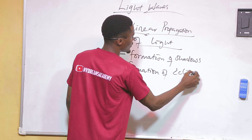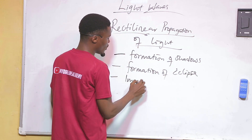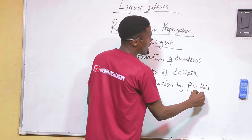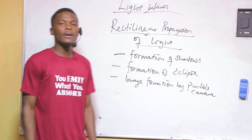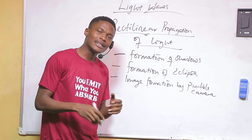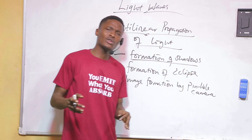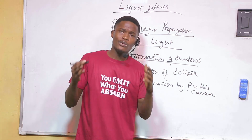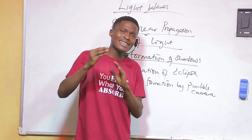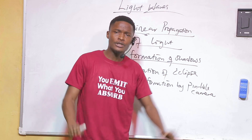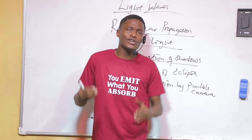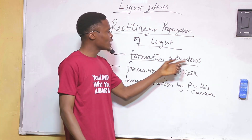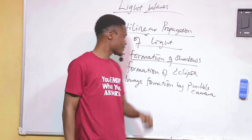The evidences are: formation of shadows, formation of eclipses, and image formation by pinhole camera. A shadow is formed when an opaque object obstructs the movement of light. As a human being, when you stand outside in sunlight, you obstruct the movement of light and your shadow is cast on the ground. If you were transparent, light would pass through you and no shadow would form.